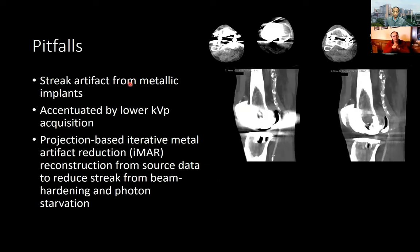Streak artifact from metallic implants — from hip or knee arthroplasties or fixation hardware — can certainly be problematic. For runoffs, we acquire with a lower KVP to optimize enhancement, and that lower KVP leads to increasing streak artifacts from beam hardening and photon starvation. Fortunately, with the newest generation of scanners we have the ability to mitigate this using projection-based iterative metal artifact reduction (IMAR) technique. In a patient with bilateral knee arthroplasties, applying this technique allows us to recreate some data — not perfect, but a better opportunity to evaluate those vessels.